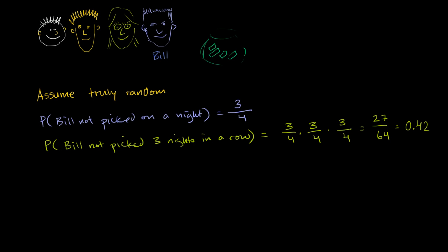So this doesn't seem that unlikely. It's a little less likely than even odds, but you wouldn't question someone's credibility — there's roughly a 42% chance that three nights in a row Bill would not be picked. So if you're assuming truly random, your hypothesis that it's truly random seems reasonable. There's a good chance you're right, since there's a 42% chance you'd see that outcome if your assumption is true.